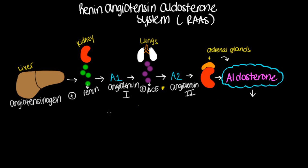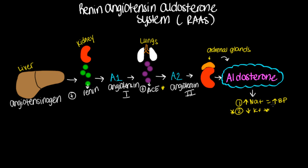Let's focus on the aldosterone first. When aldosterone is created, it's actually going to help blood pressure regulation. When we have aldosterone, we are increasing the reabsorption of sodium. If we increase the reabsorption of sodium, that means we are increasing the fluid that we have on board, which essentially is going to increase our blood pressure. A side note to keep in mind: aldosterone also decreases potassium because it's leaving through the urine.